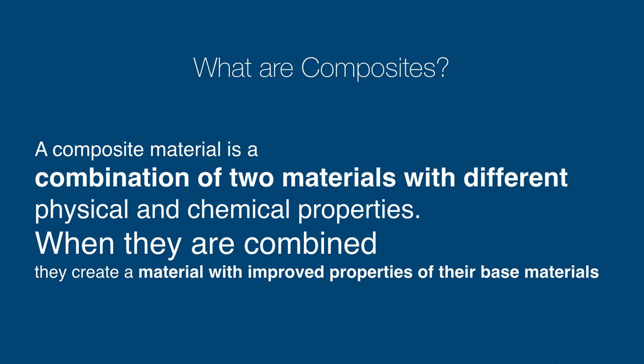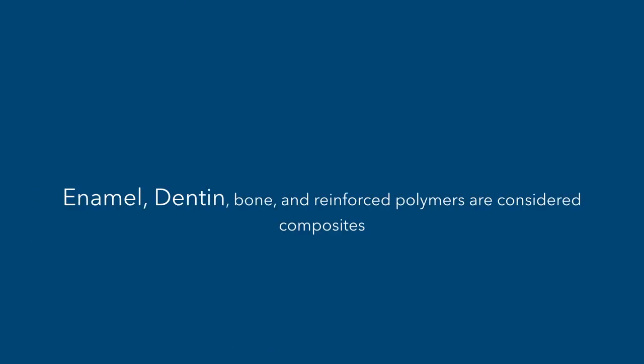What are composites? By definition, a composite is a multi-phase material — not a single-phase material. It has three different phases: the matrix phase, the filler phase, and the joining element which is the silane coupling agent. It is a combination of two materials with different physical and chemical properties that come together to form a composite material.